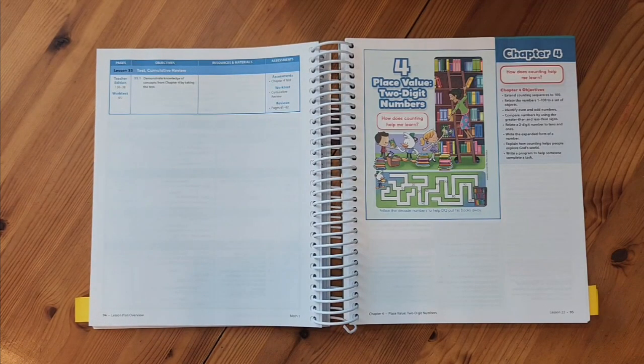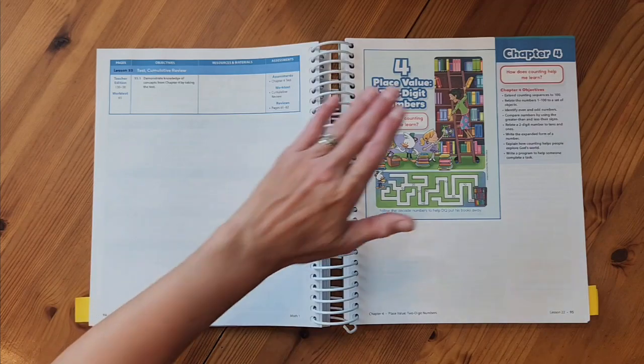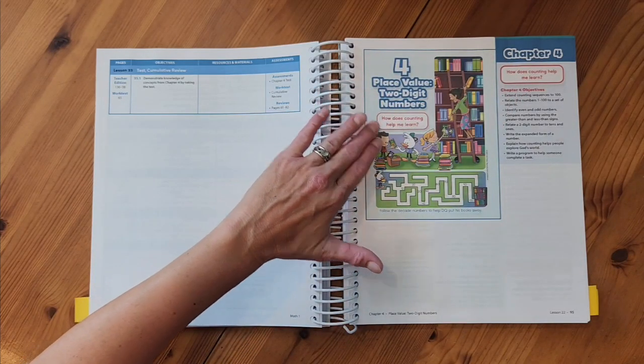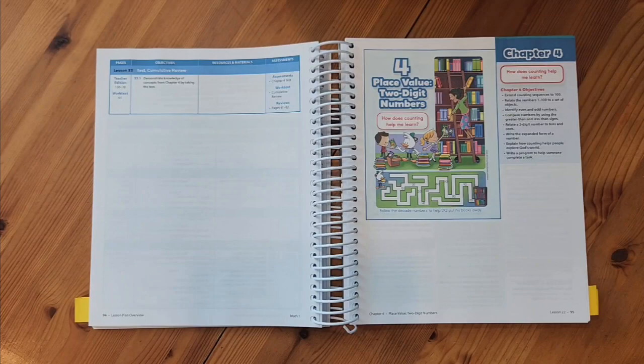Now we're going to introduce chapter four. We're going to start by having our essential question. And this page right here is what the student would be looking at to introduce this chapter. So our essential question is, how does counting help me learn? And then we're going to follow the decade numbers to help DQ put his books away.